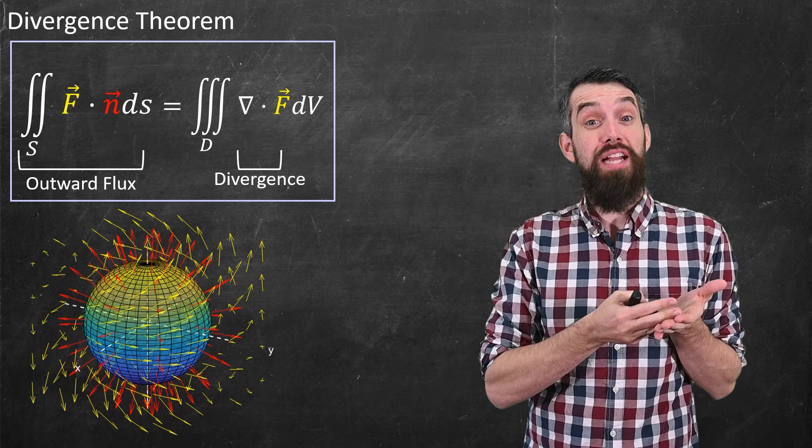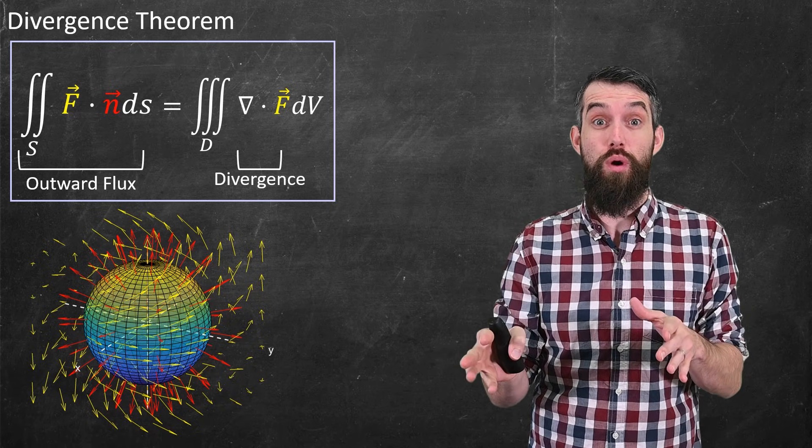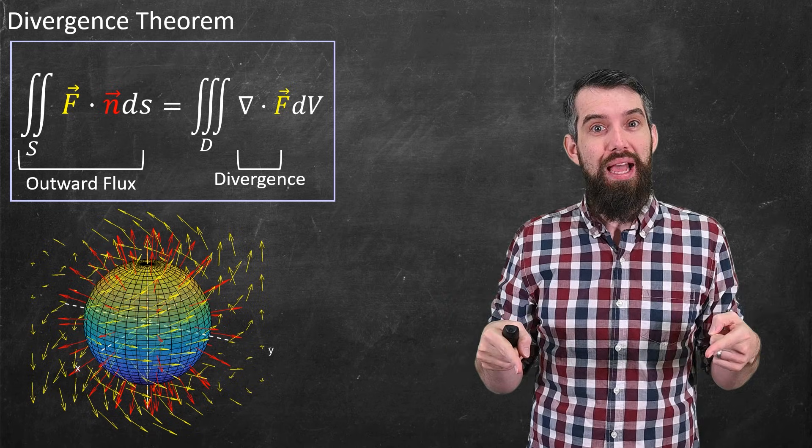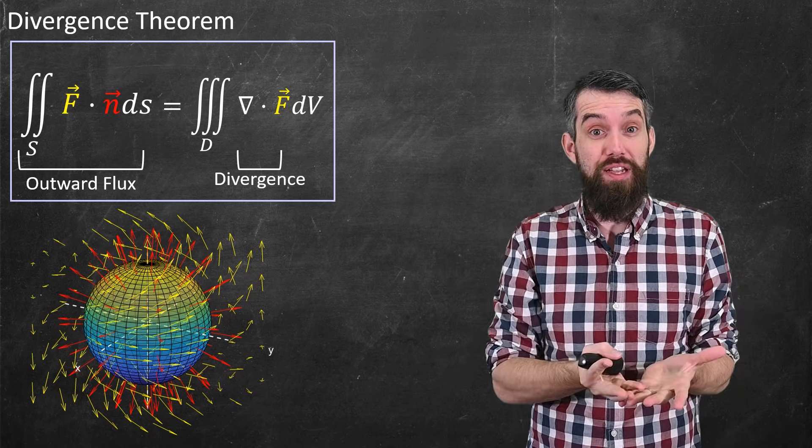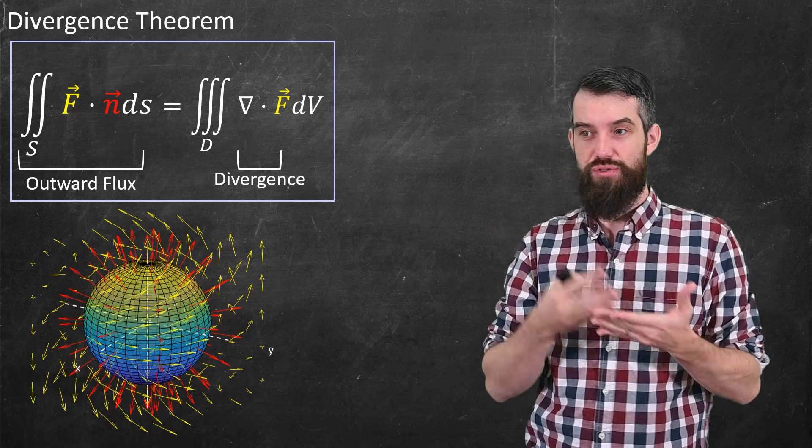So what happens to the actual formula? Well, the left-hand side still represents the outward flux, but it's a completely different formula than it was before. Previously, it was the outward flux across a curve, but now I'm talking about the outward flux across a surface. So the left-hand side of the divergence theorem is a surface integral.